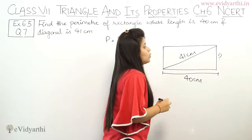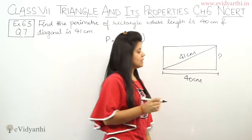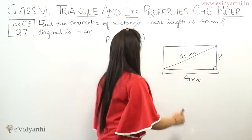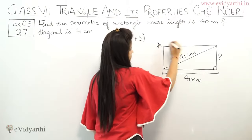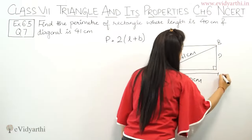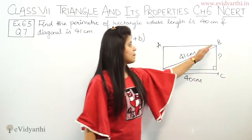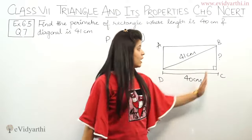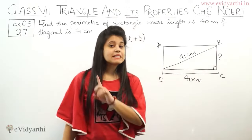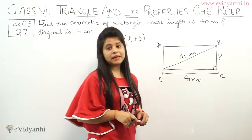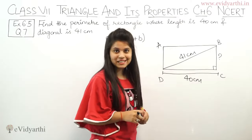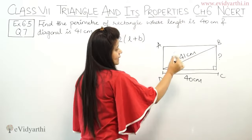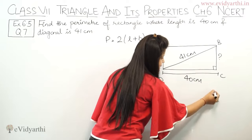So now we know that in rectangle properties, these angles are 90 degrees. So first let's name it: A, B, C, D.